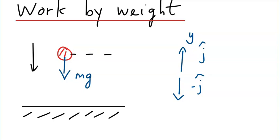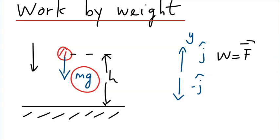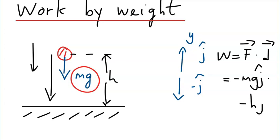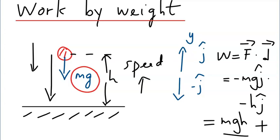As it falls down, it goes through a certain displacement. Let's call the displacement h as it falls down back to earth. The work done by this weight equals the dot product of force and displacement. The force is the weight heading downward, so it's minus mg j-hat, dotted into displacement, which is also going in a downward direction, so it's minus h j-hat. The answer is mgh. Note that this work is positive, which means as it falls down, its speed increases.